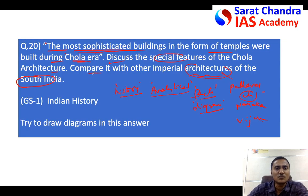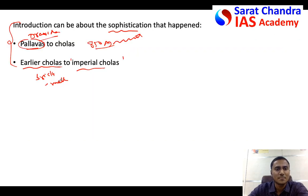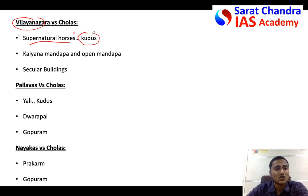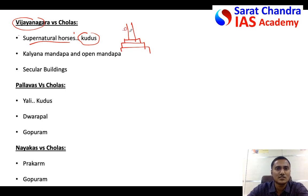Let us start comparing with Vijayanagara first. In Vijayanagara temples you find supernatural horses in the temple, whereas in Cholas such horses are not there - only kudus will be there. If this is a pillar, at the end of the pillar there would be horseshoe-shaped kudus in Chola temples, whereas in Vijayanagara, rampant horses would be there.